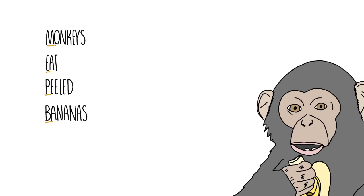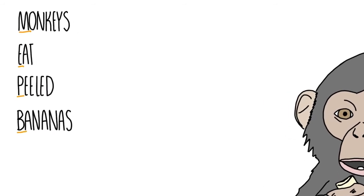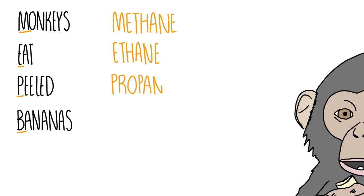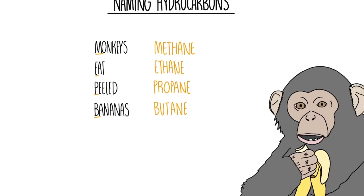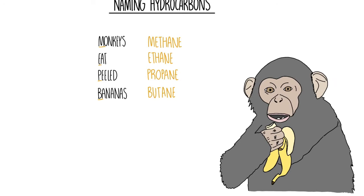Let's go through the alkanes. Remember, those were the hydrocarbons that only contained single carbon to carbon bonds. In other words, they're saturated. For monkeys, it would be methane. Eat, ethane. Peeled, propane. And bananas is butane. Those words are telling us how many carbons are in those hydrocarbons. Methane indicates that there's just one carbon atom. Ethane is two carbon atoms. Propane is three. And butane is four.